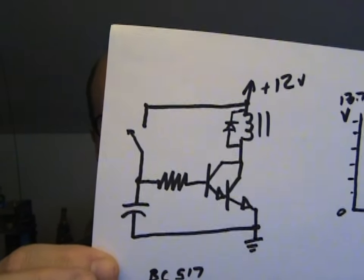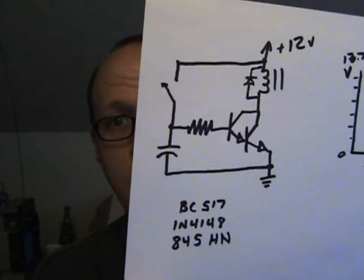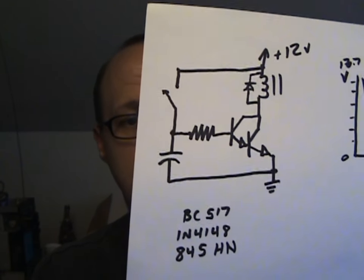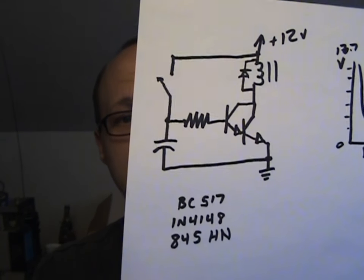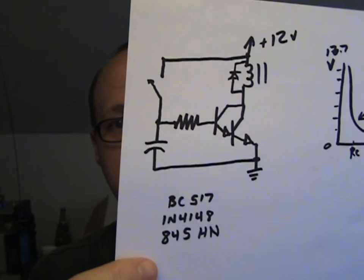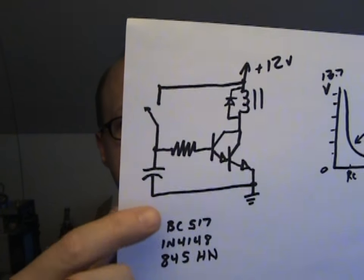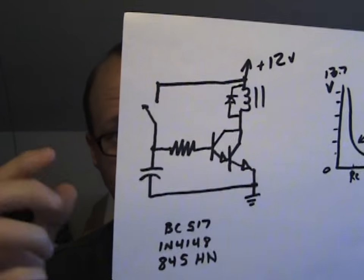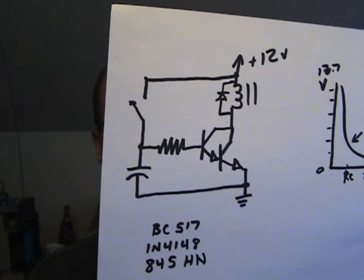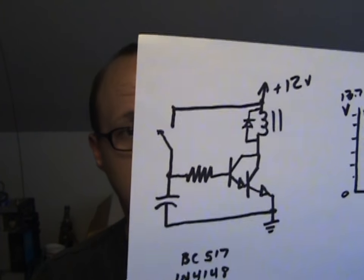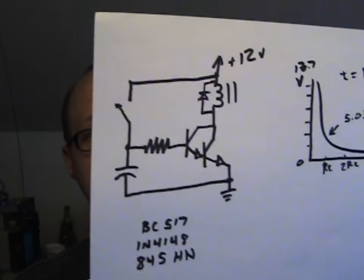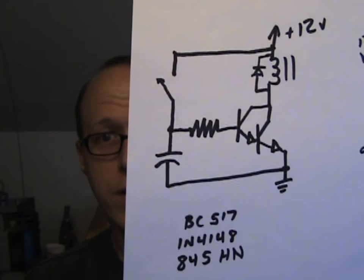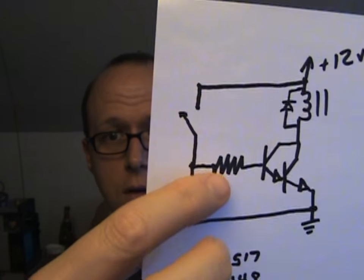So I've got the relay in my junk box. It's an 845HN that I pulled out of some piece of gear. Across the coil of that relay, we'll put a diode, a 1N4148. And this transistor here is a Darlington transistor, a BC517 is what I've got on hand here. So we know what those parts are going to be. Now we just need to figure out what the values of this capacitor and this resistor here are going to be.